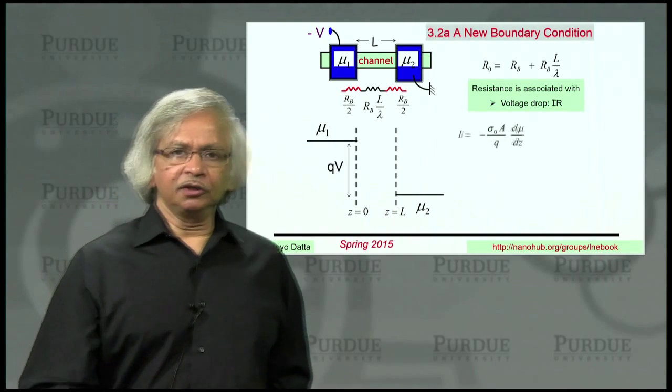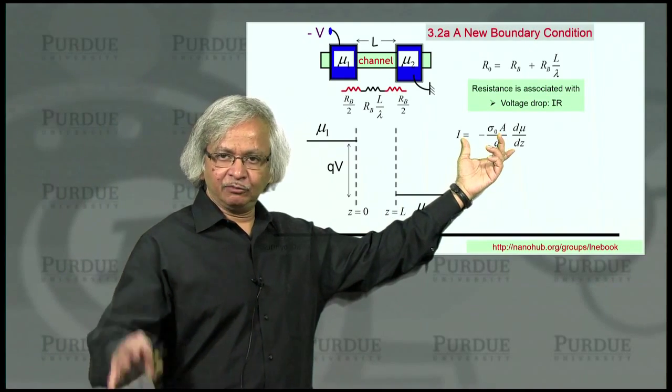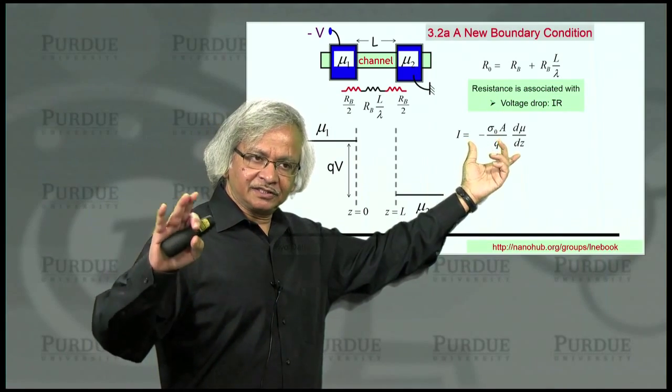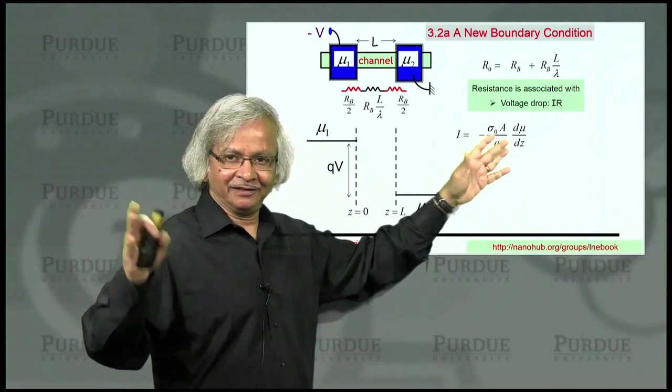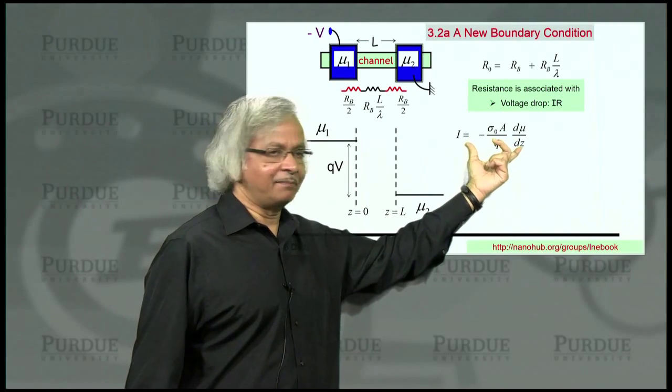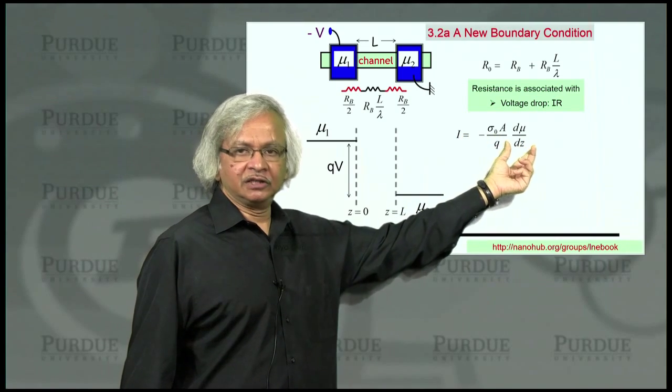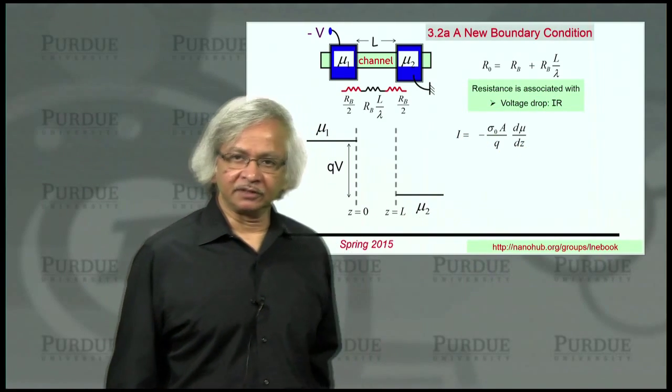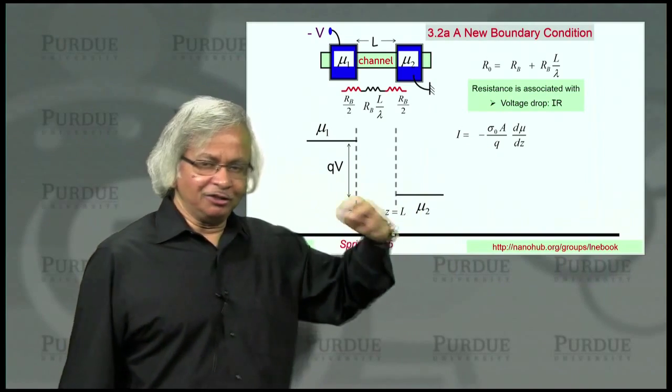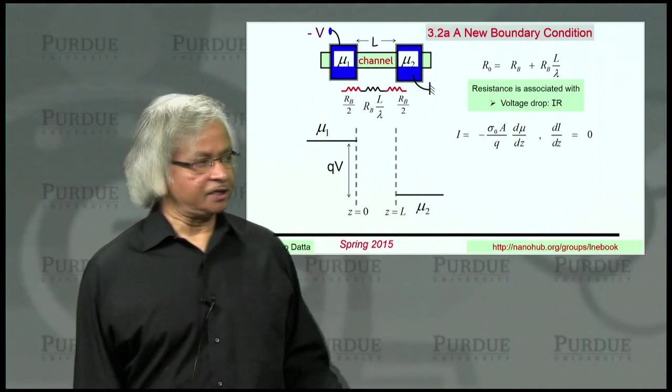Now, what you could do is start from this diffusion equation. Again, we discussed this in the introductory lecture that it's actually the drift-diffusion equation, really. It includes both drift and diffusion. But this is the basic equation which says that current is proportional to the slope of the electrochemical potential. Now, there's one more equation actually you need in order to be able to solve this. And that's what's called the continuity equation.